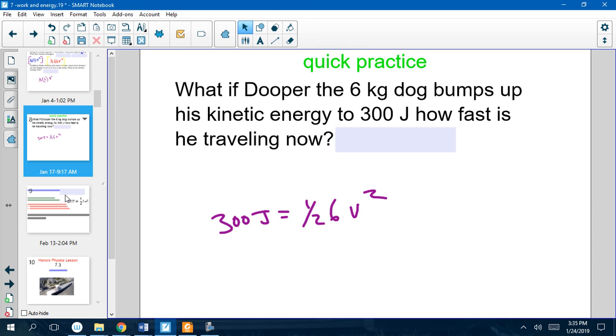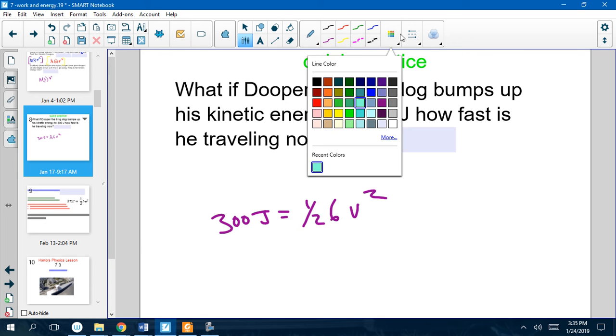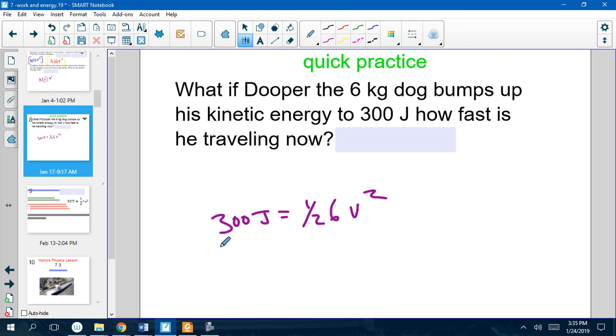All right. So, let's see if we can do it the other way. So, what if Dooper has an energy of 300 joules, how fast is he traveling? So, 300 joules equals half of our mass, velocity squared.